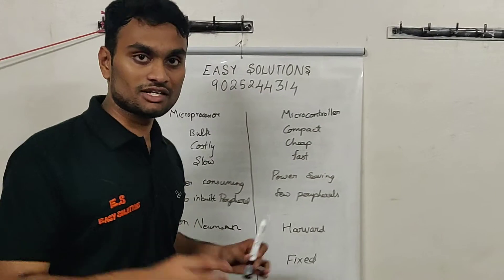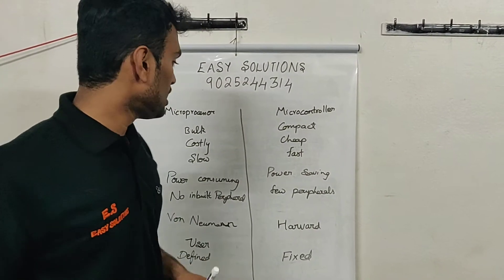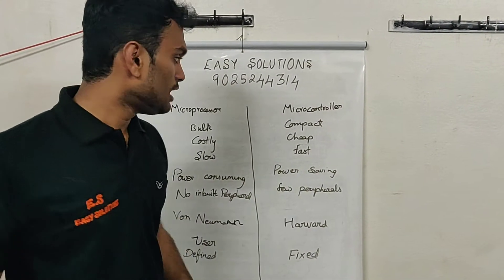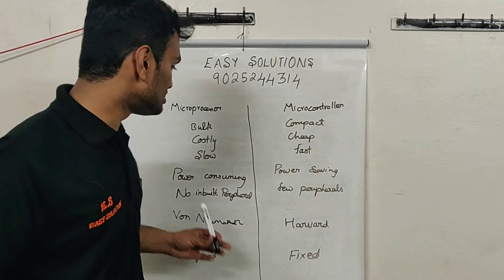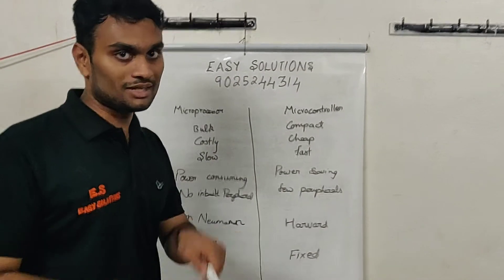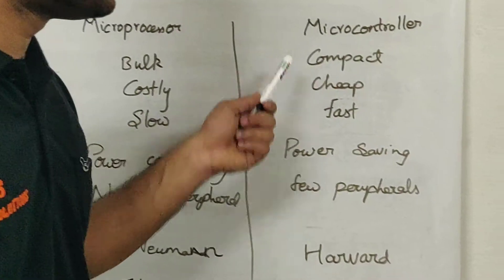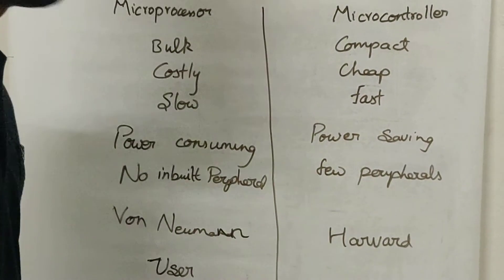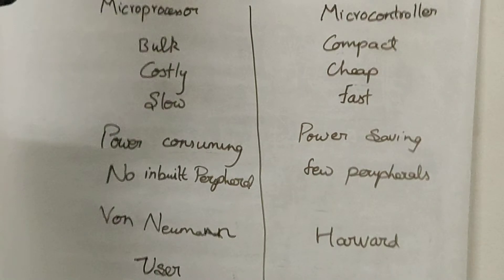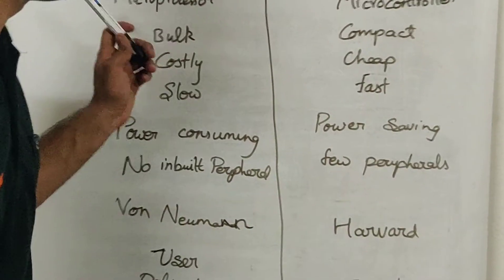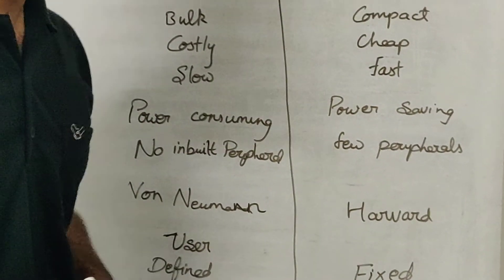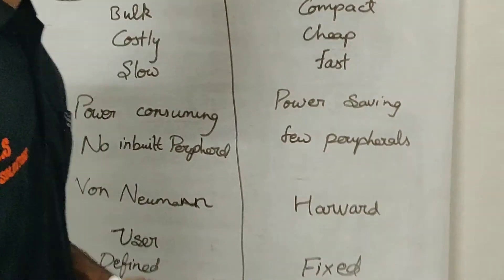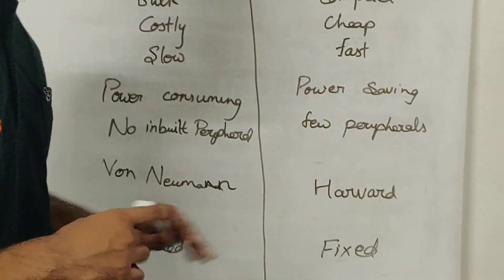If you have a microcontroller, you can use a chip to use power. But the microprocessor is component to component. If you have power consuming, then you can save with the controller. If you have a microcontroller, there is no input for the process. If you have a microcontroller, it is a very important concept. One Von Neumann architecture is a microprocessor. But the microcontroller is a Harvard architecture. If you have a microcontroller, it is user defined and fixed.